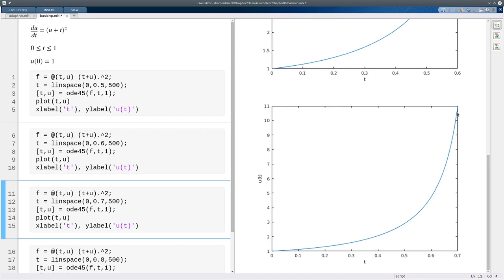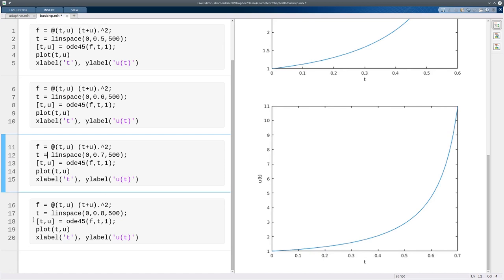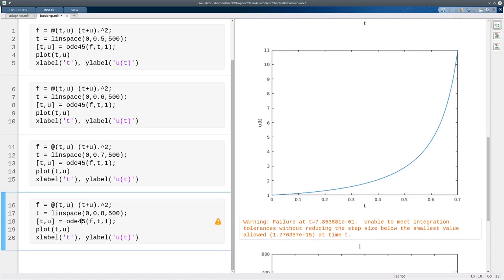Let's go out to 0.7. Now, okay, the growth has taken off. It's gotten over 10. Let's go out to 0.8.